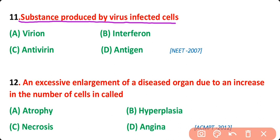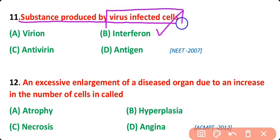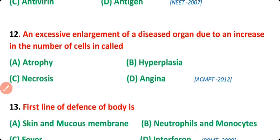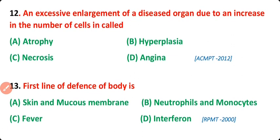Question number 11: Substances that are produced by various infected cells are viron, interferon, antivirin, or antigen? The correct answer is option B. Substances produced by various infected cells are known as interferon, and these are antiviral proteins.